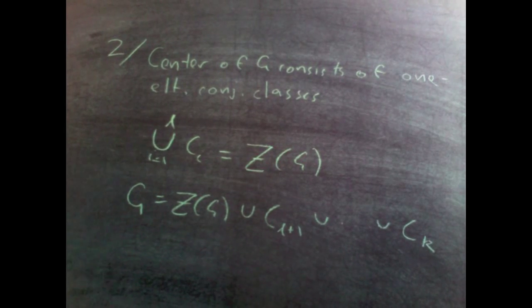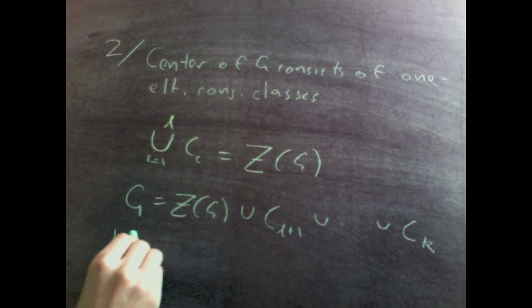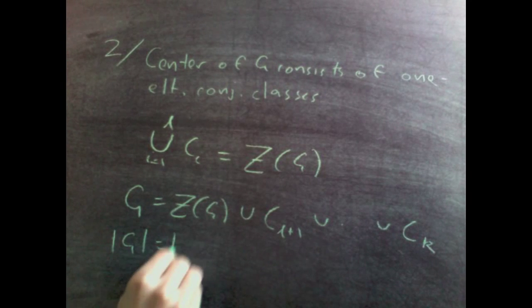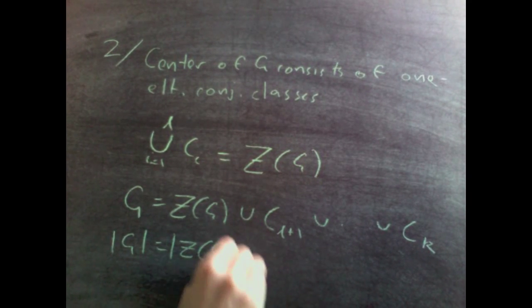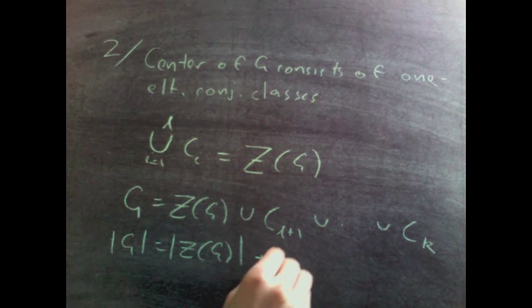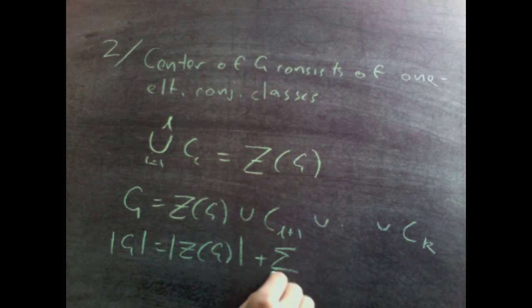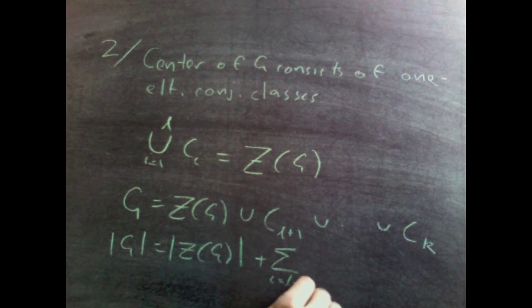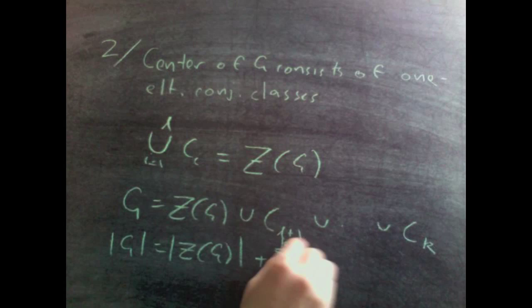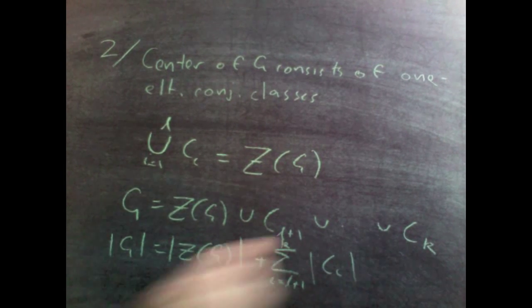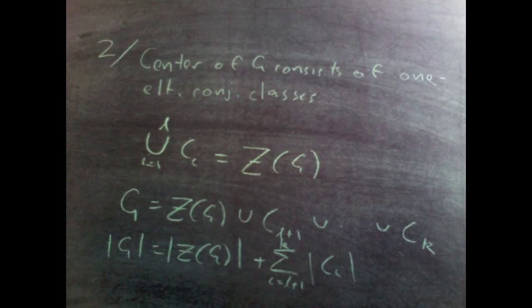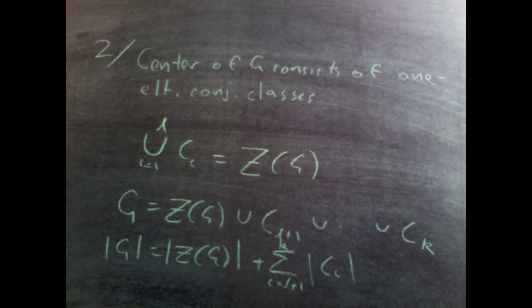And now all we have to do is take the mods. The size of g is equal to the size of the center of g plus the sum of i equals l plus 1 to k of c i. And that's how you derive the class equation.